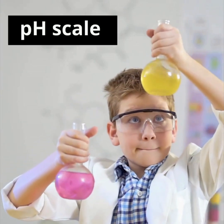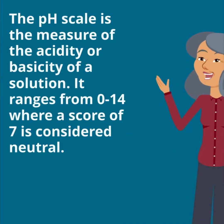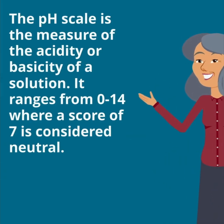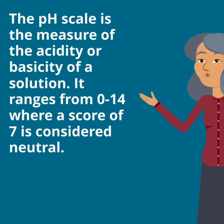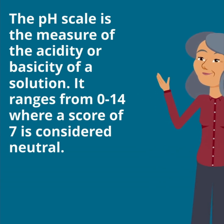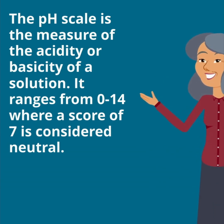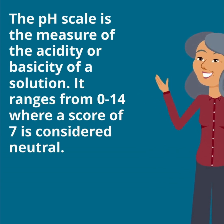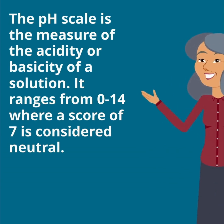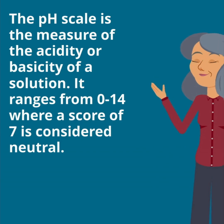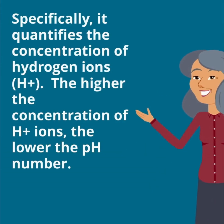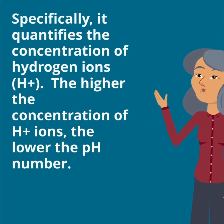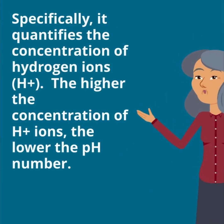The pH scale is the measure of the acidity or basicity of a solution. It ranges from 0 to 14, where a score of 7 is considered neutral. Specifically, it quantifies the concentration of hydrogen ions.